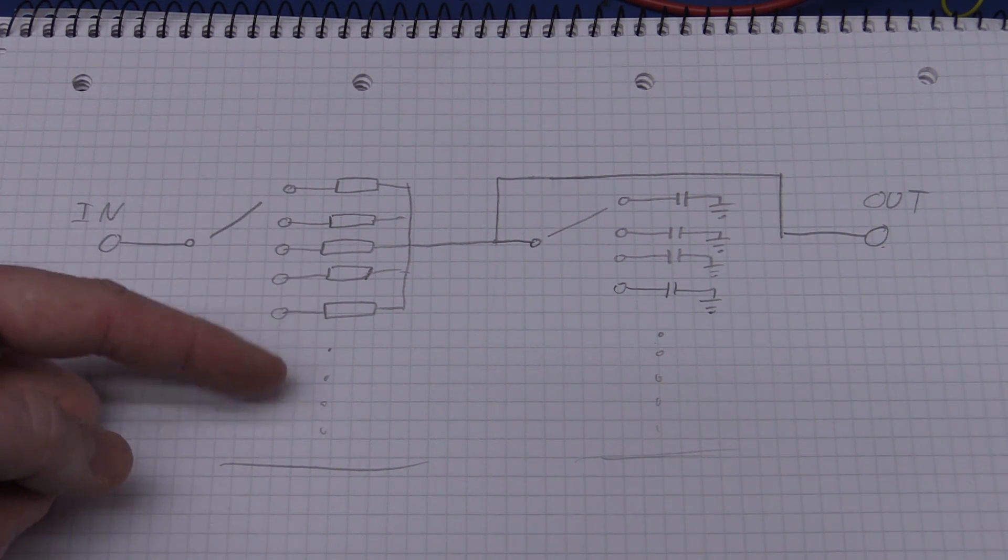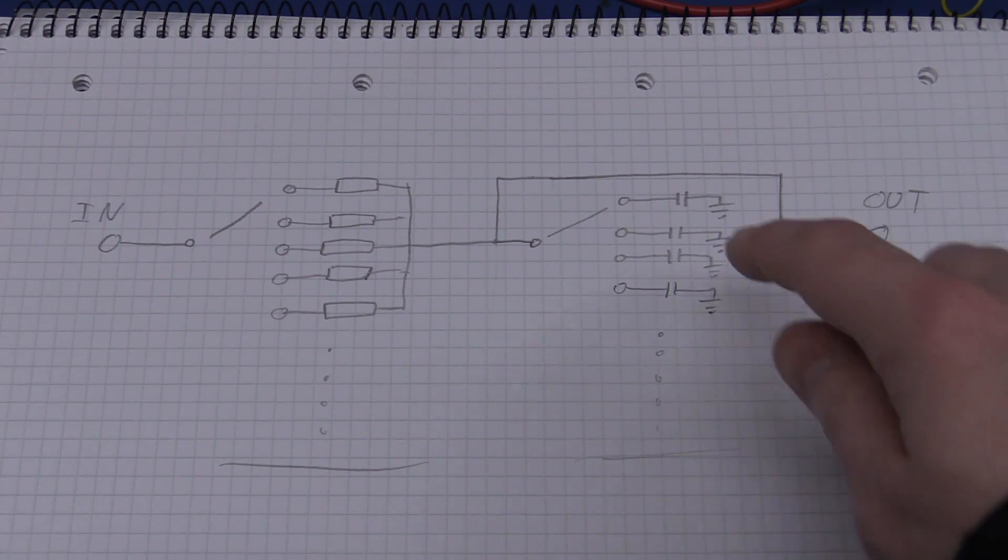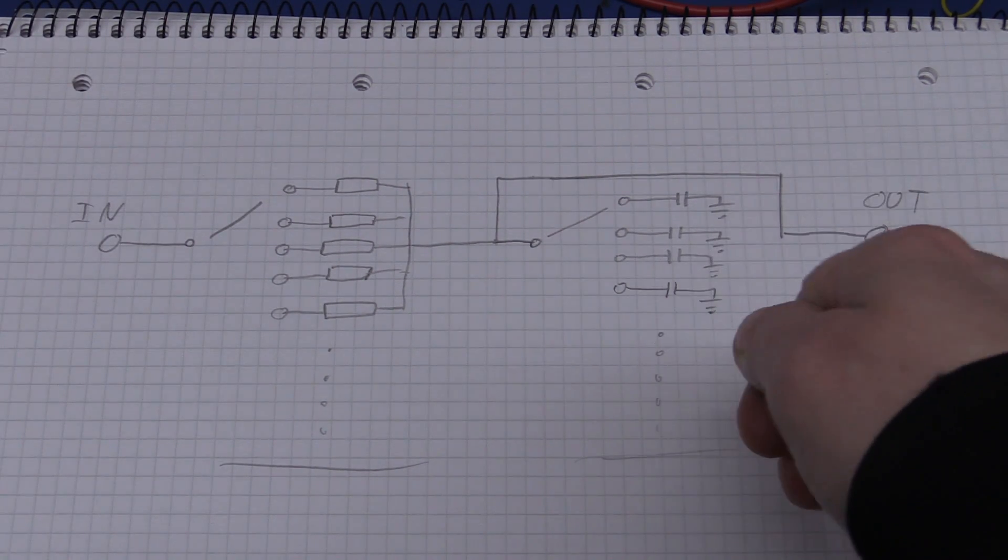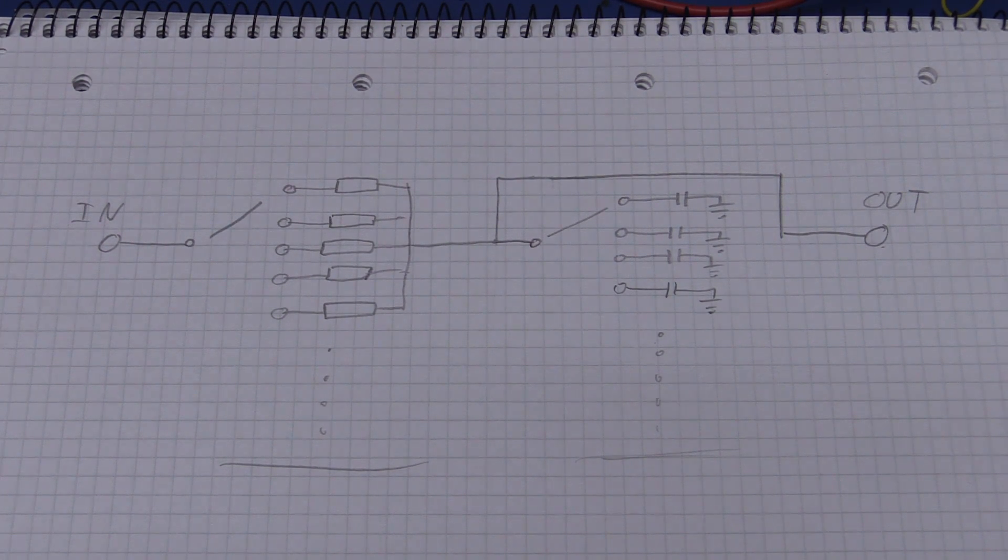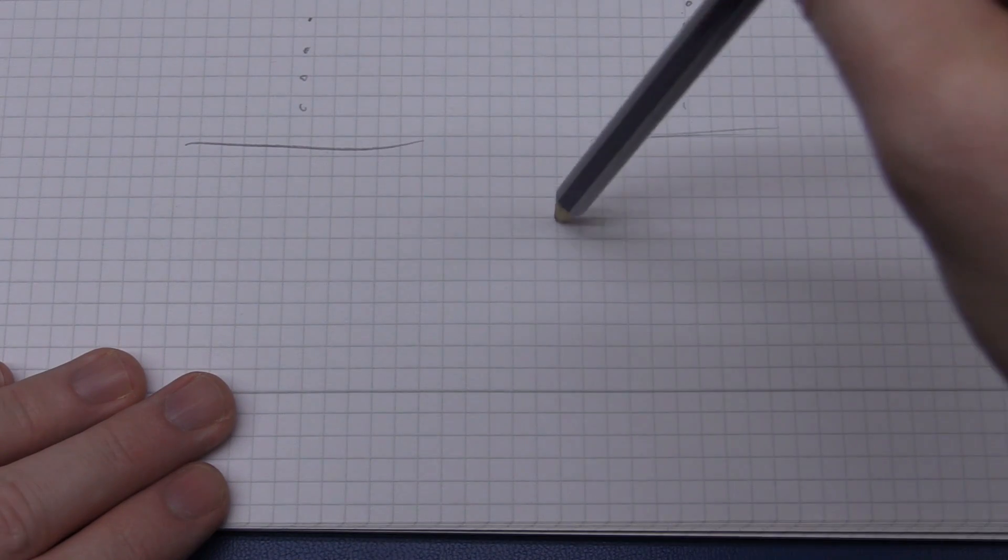All of these go to ground. By selecting different resistors we can select the range, and by selecting a different capacitor we can select a multiplier. To calculate this we will have to use some math, unfortunately.